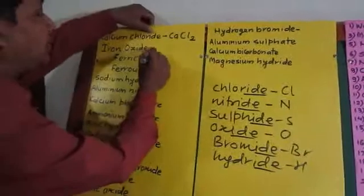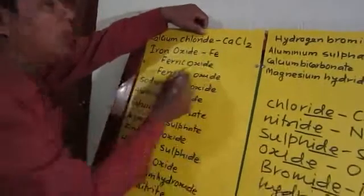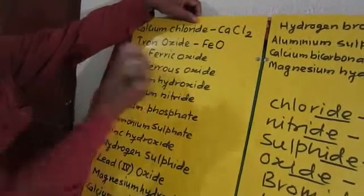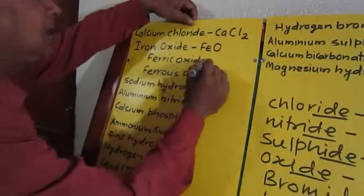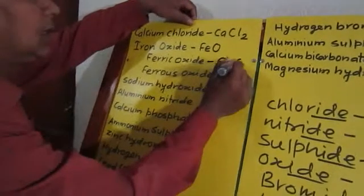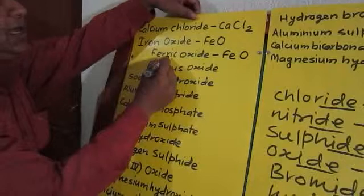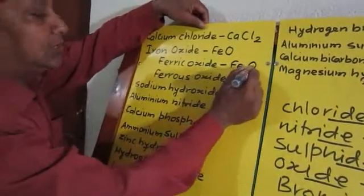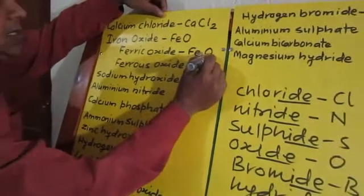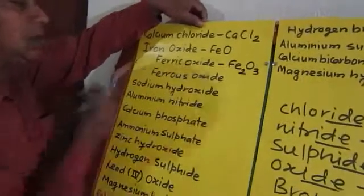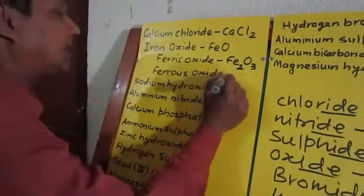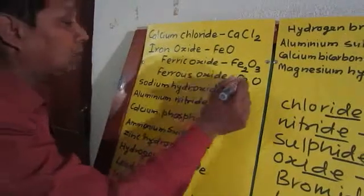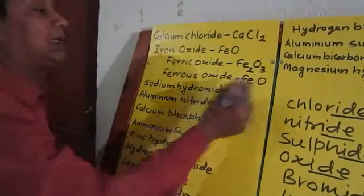Iron oxide: iron's symbol is Fe, oxide means oxygen is combined. Valency of iron is 2 and oxygen is 2 — equal valency, no exchange, giving FeO. Ferric oxide: 'ferric' means iron has valency 3 this time, and oxygen has valency 2. We exchange: iron's 3 goes to oxygen and oxygen's 2 goes to iron, giving Fe₂O₃. Ferrous oxide: iron valency 2 and oxygen valency 2 — equal valency, no exchange.